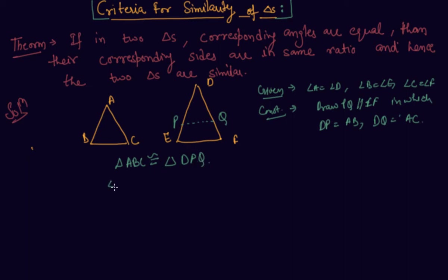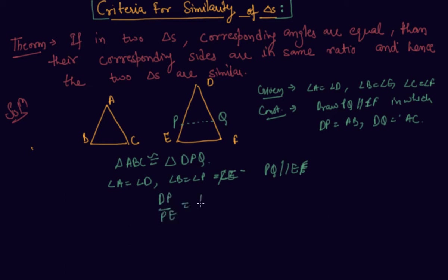This gives us angle A equal to angle D, which was given. So angle B equals angle P, and angle B also equals angle E. And PQ is parallel to EF, which we drew in the construction. From BPT — the Basic Proportionality Theorem, which we discussed in our previous lectures — DP to PE equals DQ to QF.